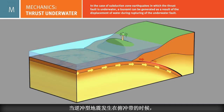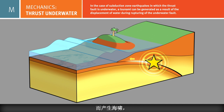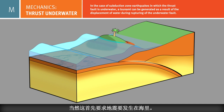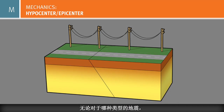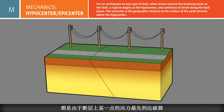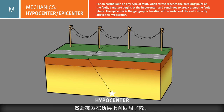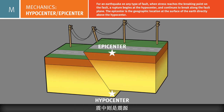If a subduction zone earthquake occurs along an underwater thrust fault, the associated uplift can displace a huge volume of water. The resulting wave is known as a tsunami. Earthquakes on any type of fault follow a similar pattern. When the stress reaches the breaking point on a fault, a rupture begins at the hypocenter and continues to break along the fault surface. The epicenter is the geographic location at the surface of the Earth, directly above the hypocenter.